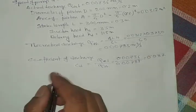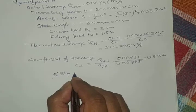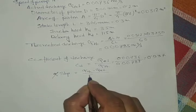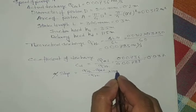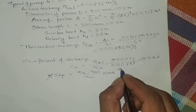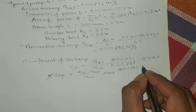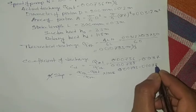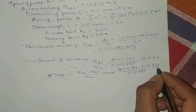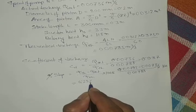Percentage of slip is equal to theoretical minus actual discharge, divided by theoretical discharge, into 100. So, 0.00785 minus 0.00736 divided by 0.00785 into 100 gives 6.25 percent.